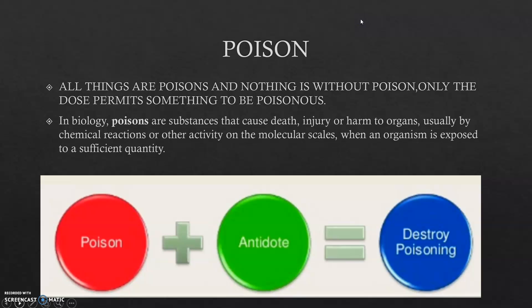So, poison — actually all things are poison and nothing is without poison character. Only the dose permits something to be poisonous. That is, if anything is consumed in a higher dose it can act as a very good poison, but sometimes it cannot act as poison in a very low dose. In biology, poisons are substances which can cause injury or harm to organs, usually by chemical reactions at the molecular scale when an organism is exposed to a sufficient quantity.